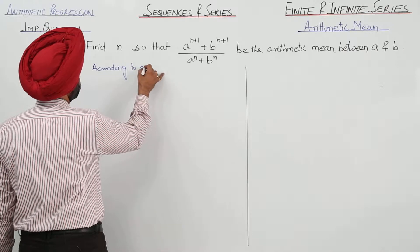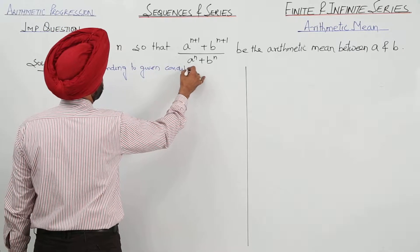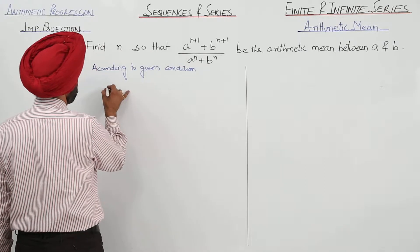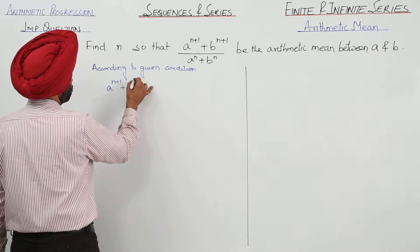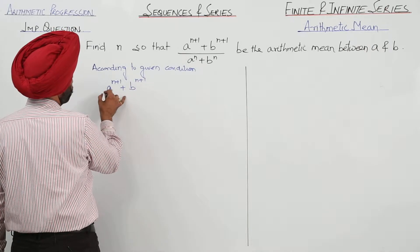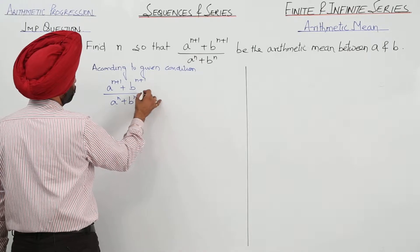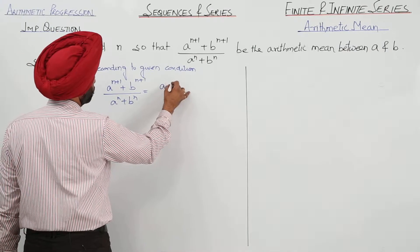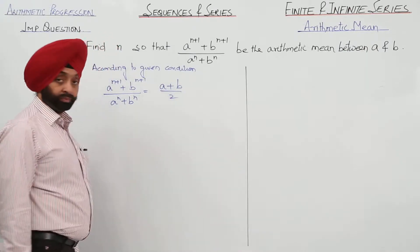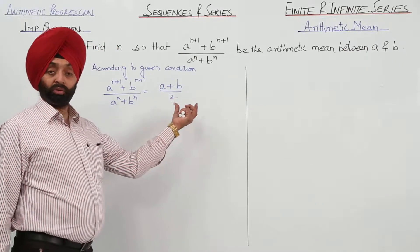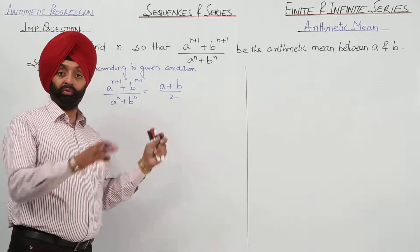According to the given condition, a raised to power n plus 1 plus b raised to power n plus 1, upon a raised to power n plus b raised to power n, equals a plus b upon 2. That is, the single arithmetic mean between a and b.